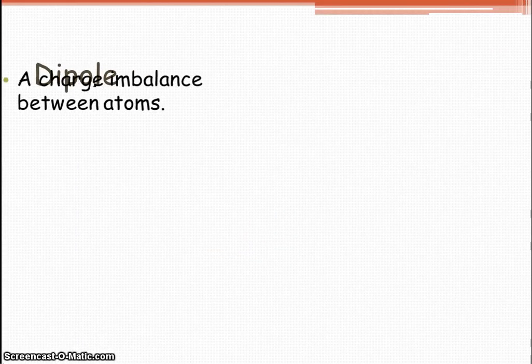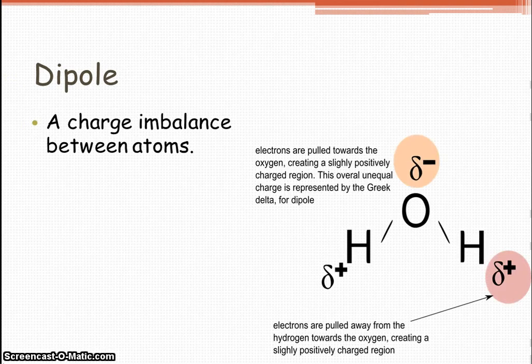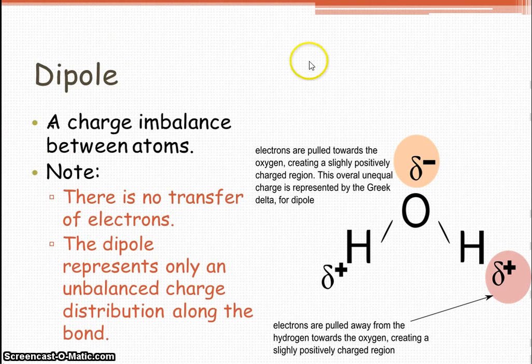Dipole. A charge imbalance between atoms. So, what I mean by this, as we look on this picture over here to the right, we see this funny little squiggly sign in a minus, and a funny little squiggly sign in a plus. Now, what that means is this symbol right here means partially. So this is partially negative, and this H over here is partially positive. And so what happens in a dipole, there's an imbalance of charge. So the electron tends to hang around one atom more than the other. Can you guess which one? That's right, the oxygen. Because oxygen is partially negative, so the electron, which is negative, hangs around the oxygen a little bit more.